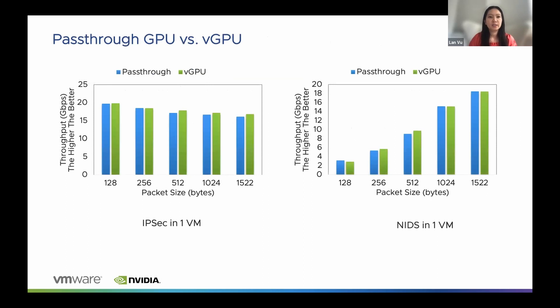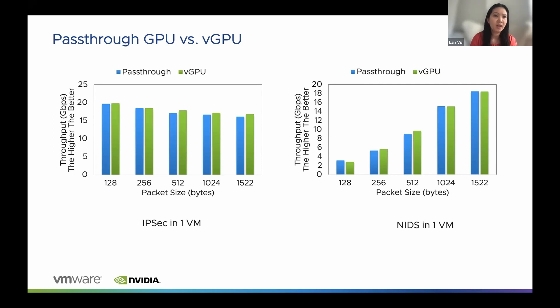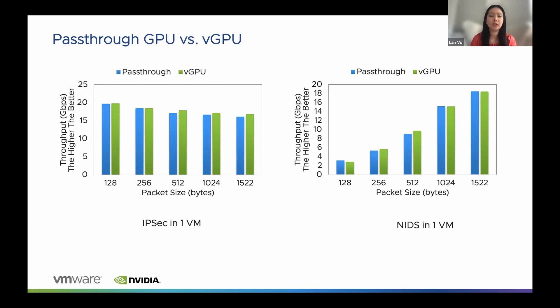The first experiment compares performance of network functions between passthrough GPU and vGPU. One of the key questions we frequently hear from customers is: what is the overhead of vGPU compared to bare metal? We can see the overhead is very minimal. The numbers here show the throughput in Gbps for IPsec network functions, and similarly, on the right side for NIDS — the overhead is very minimum. This showed the benefit of virtualization without much sacrifice in terms of performance.